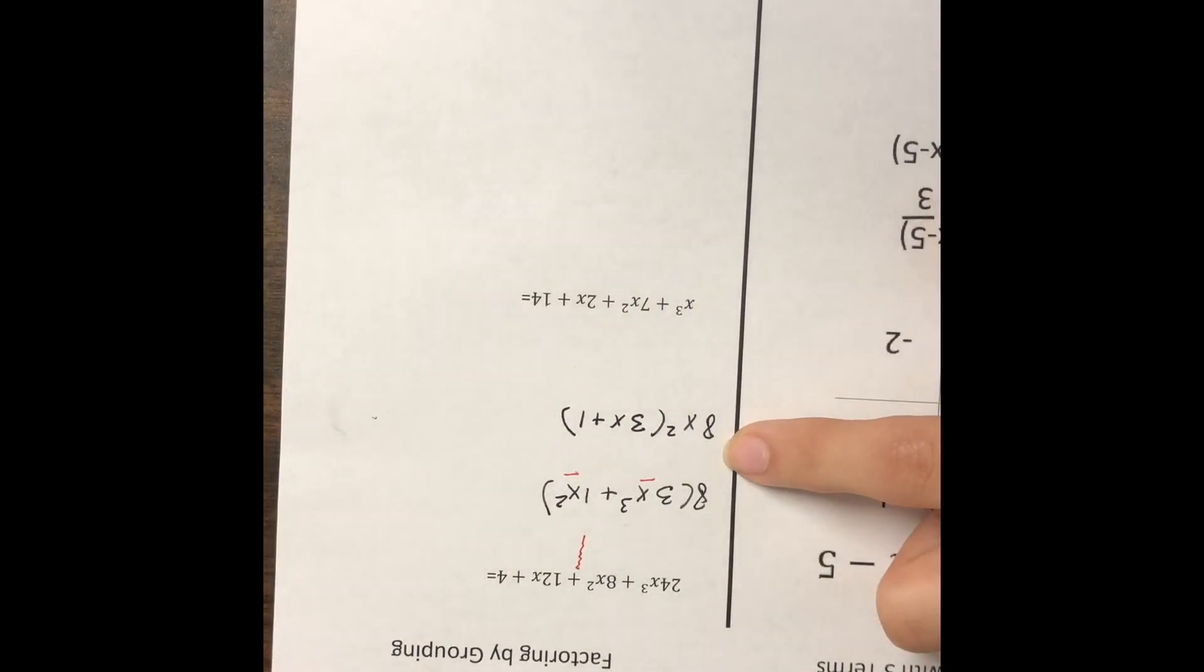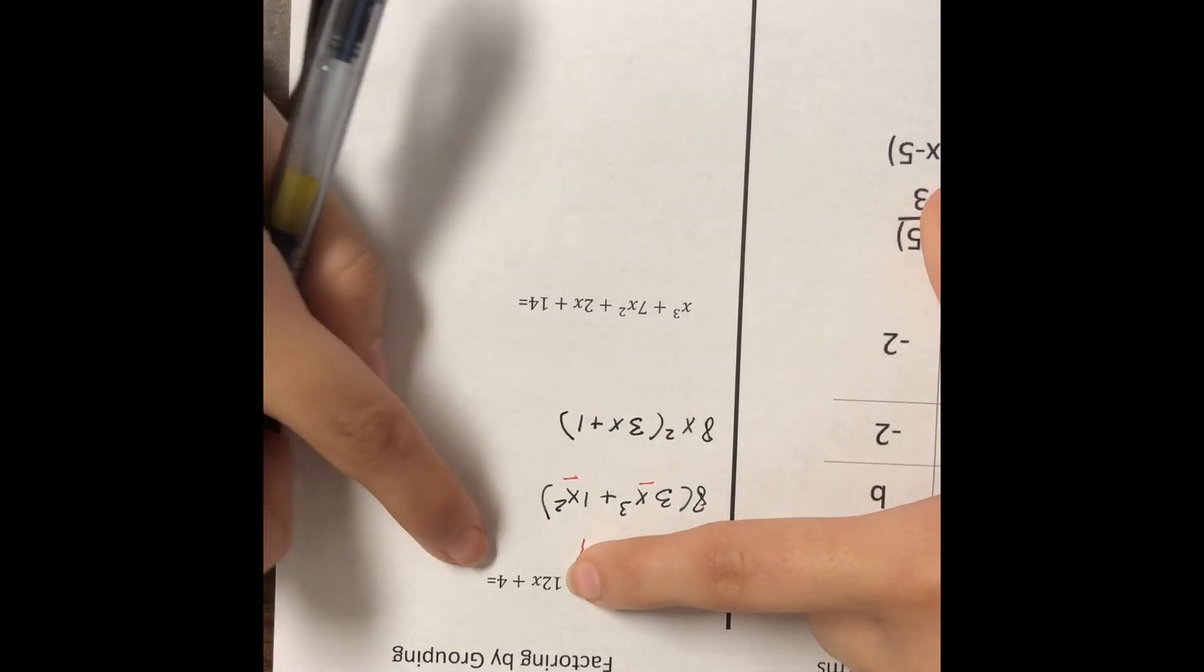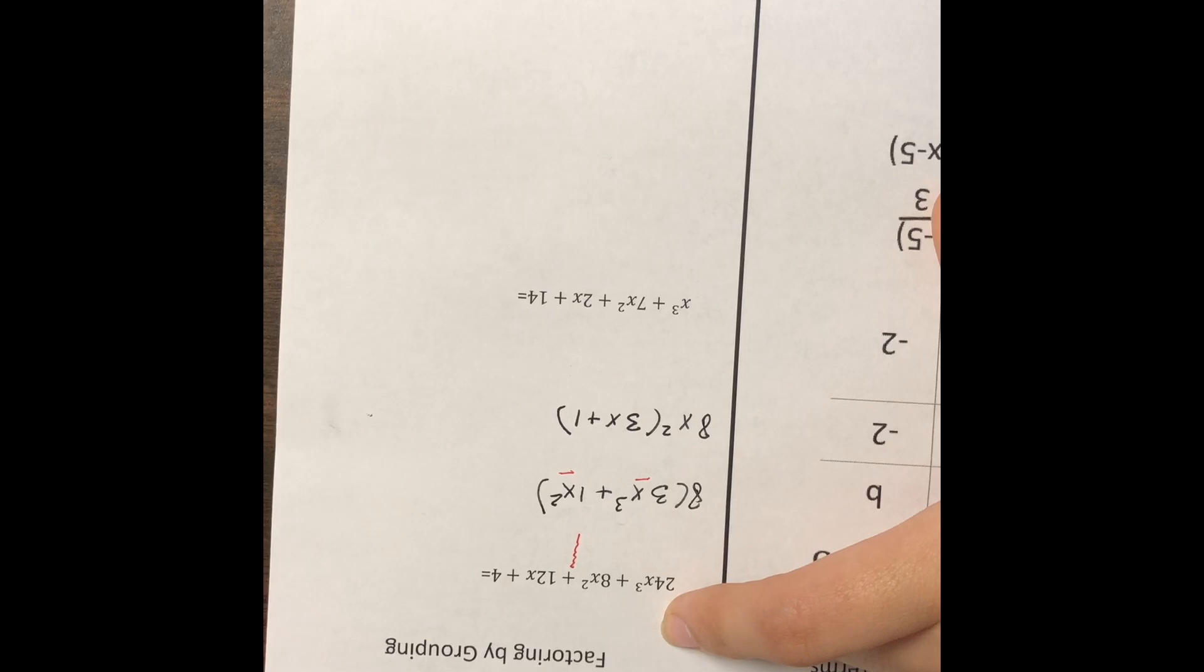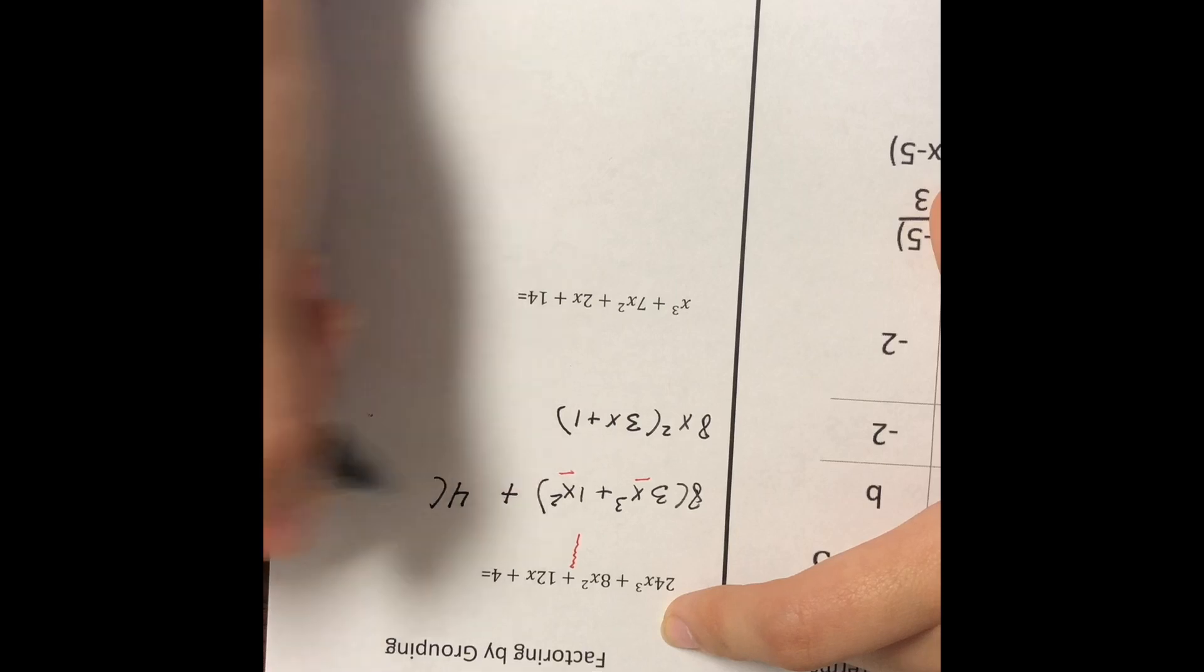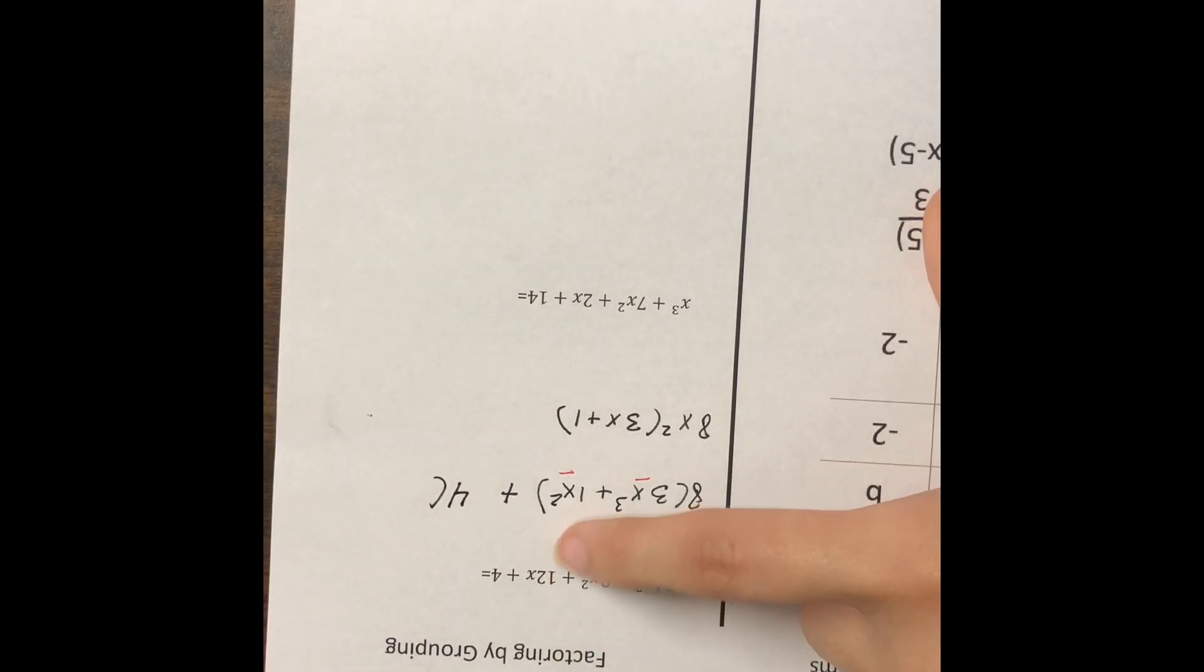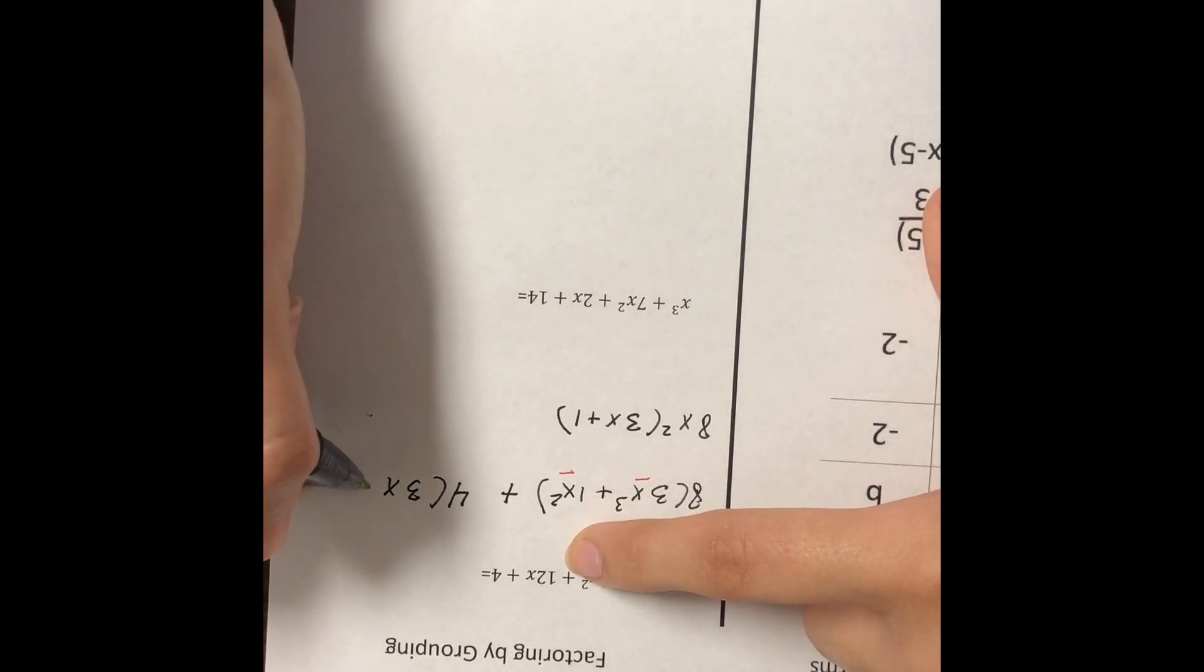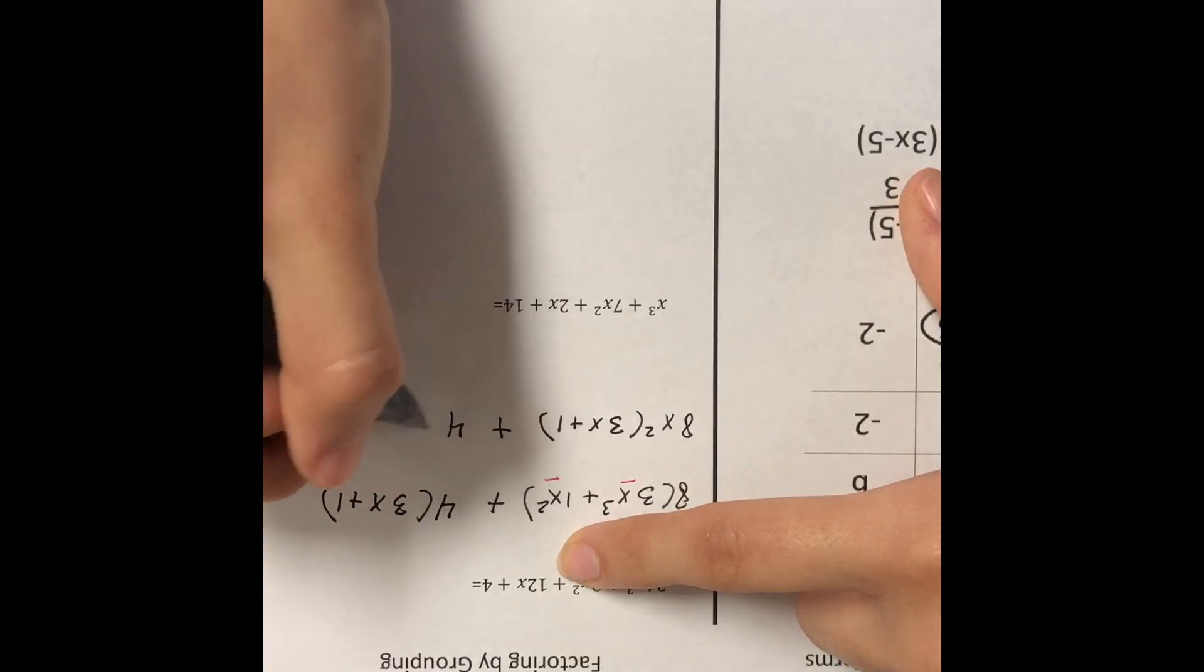So now let's do the other side. What does 12x and 4 have in common? They're both divisible by 4. So let's write a plus sign up here, and I am going to pull out a 4. So 12 divided by 4 is 3, I'm going to leave that as x, and 4 divided by 4 is 1. So let's just bring that down over here.